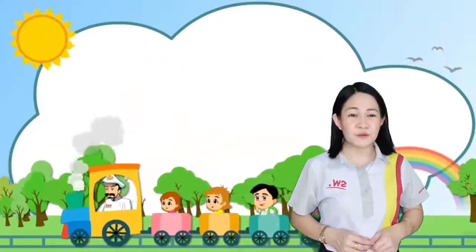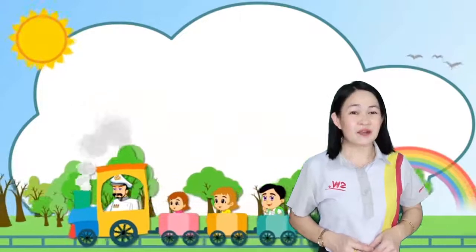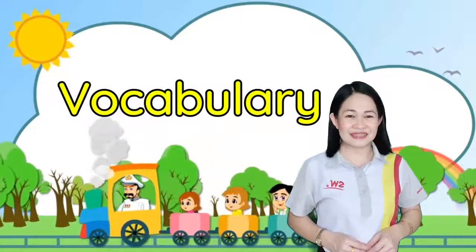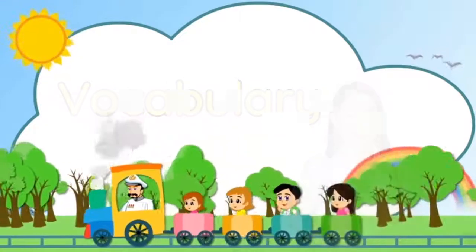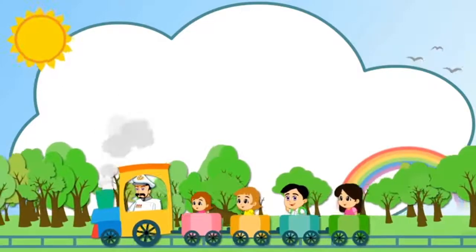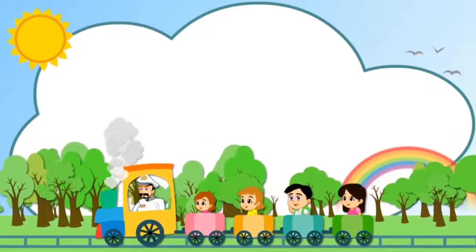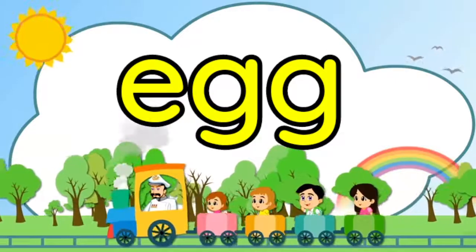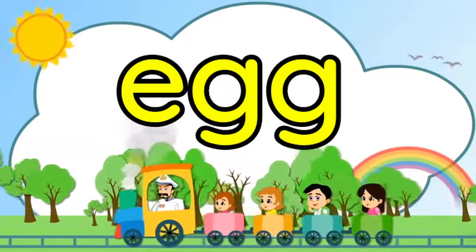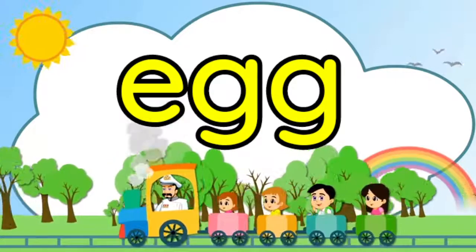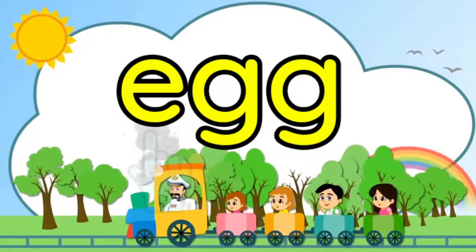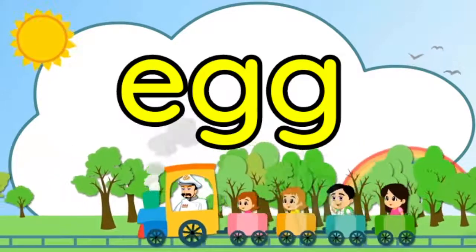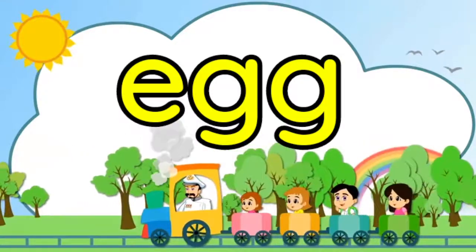So, before we go on, let's have our three vocabulary words. The first word is egg. One more time. Egg. It's E, G, G — egg.